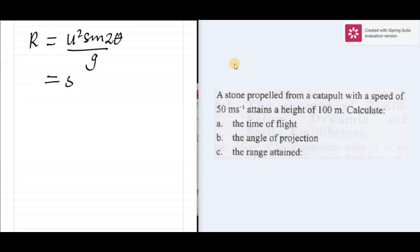u is 50, that's 50 square sin 2 times theta is 63 degrees, g is 10.